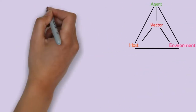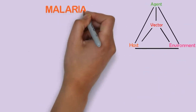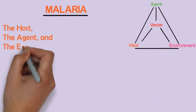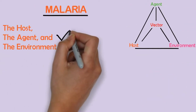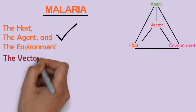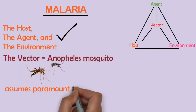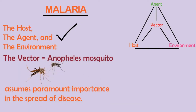In malaria, however, the host, agent, and environment are all significant, but the vector, which is the Anopheles mosquito, assumes paramount importance in the spread of disease.